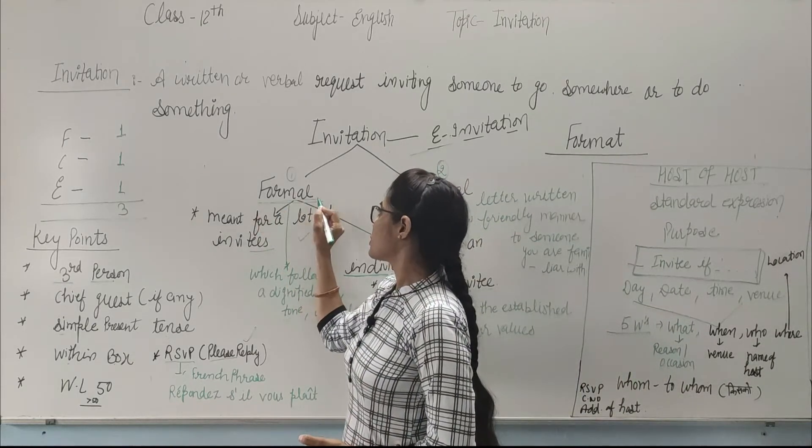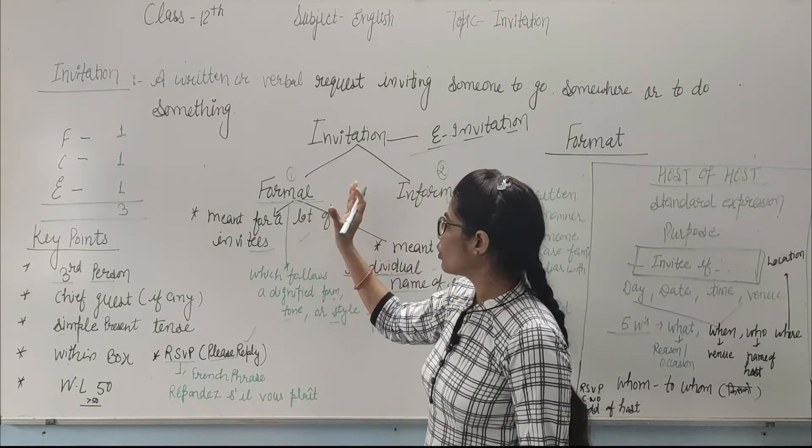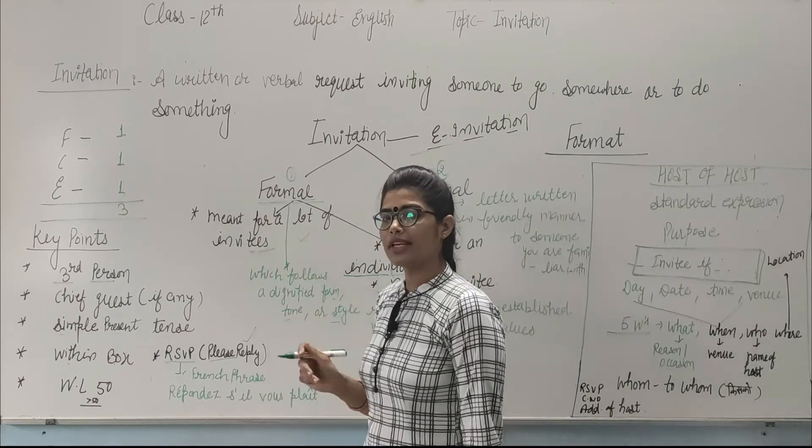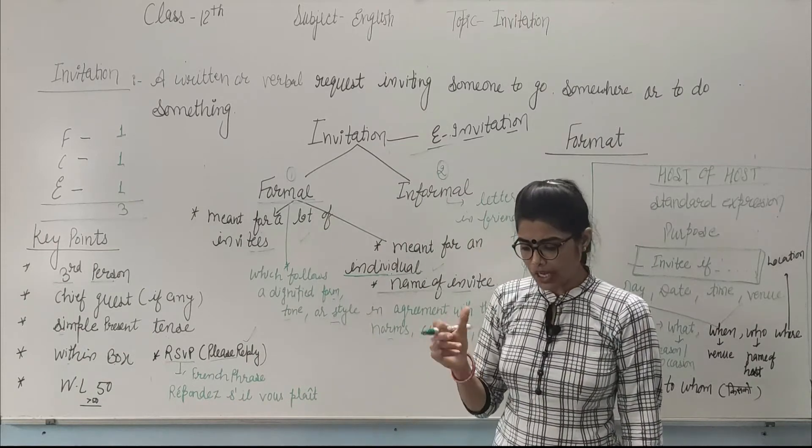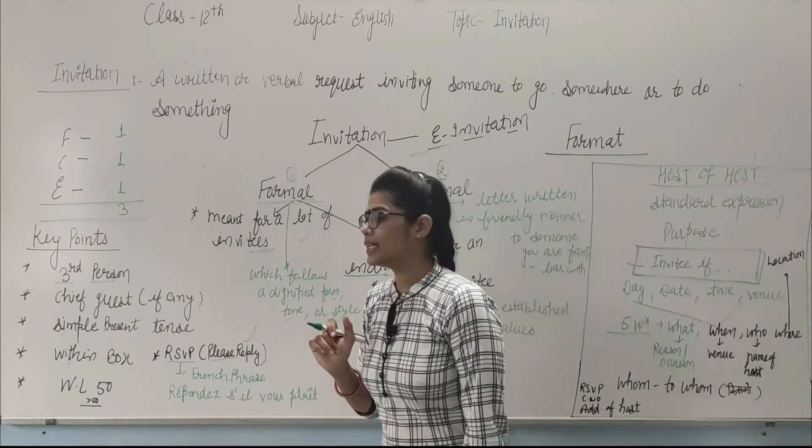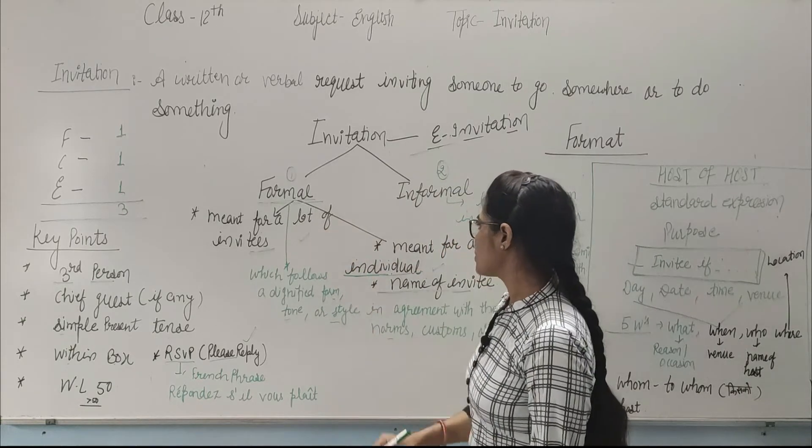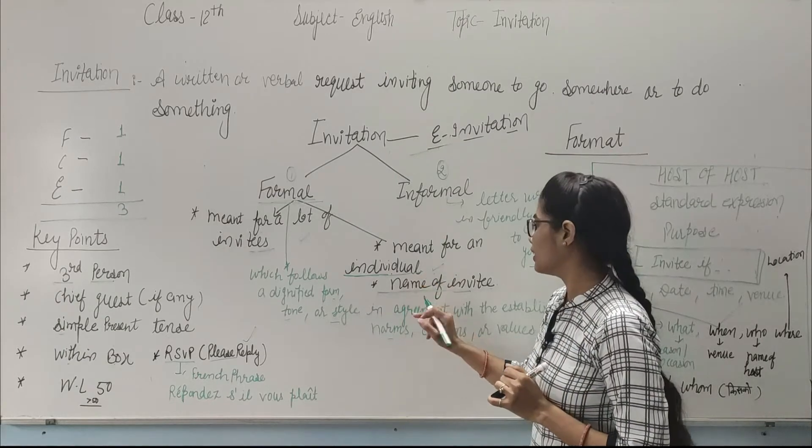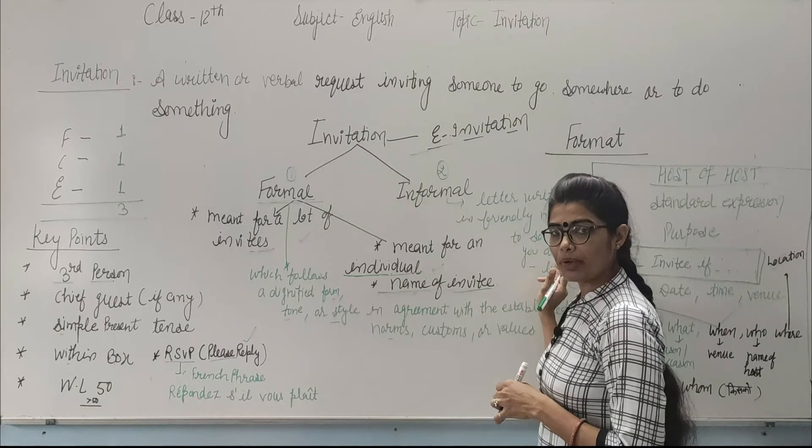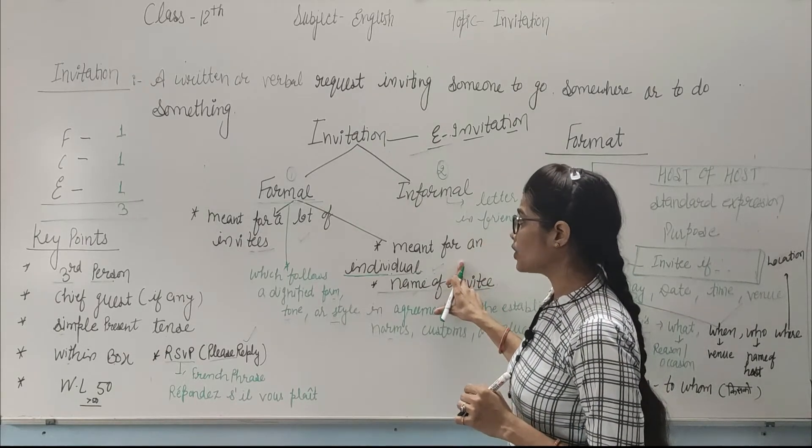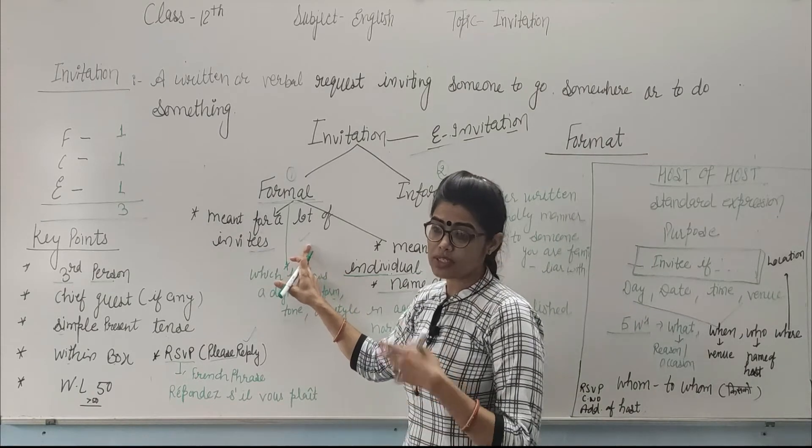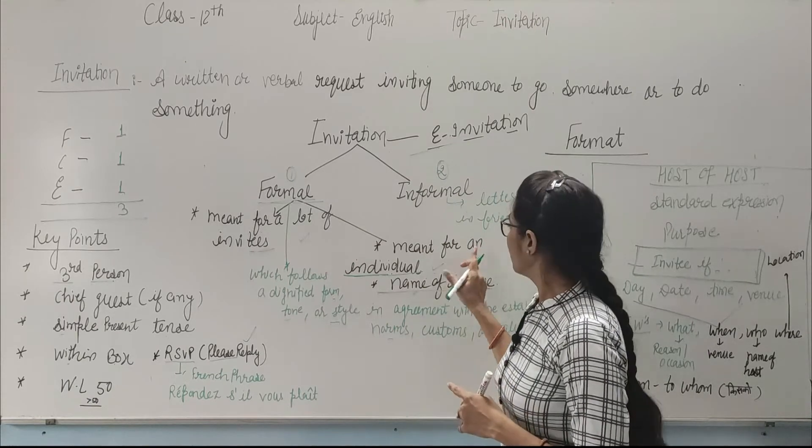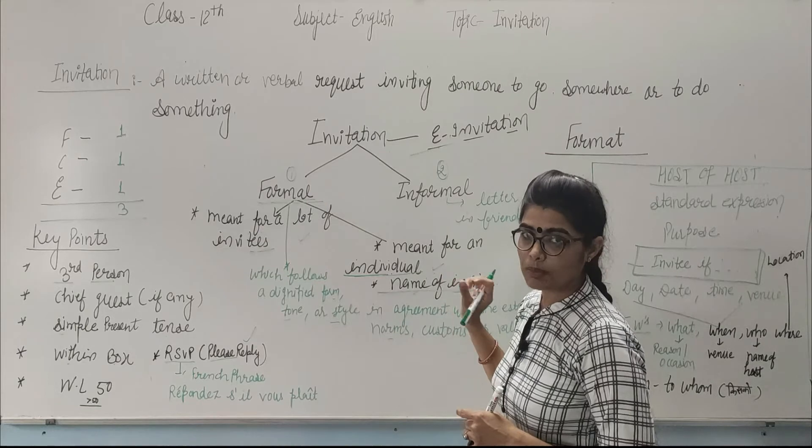Formal invitation is further divided into two parts. First is meant for a lot of invitees, where you invite all invitees - one common card is sent to everyone. Second is meant for an individual, for a special person whose name is written inside as the name of invitee. One is for lots of invitees when you're inviting many people, another is for an individual person whose name you mention.